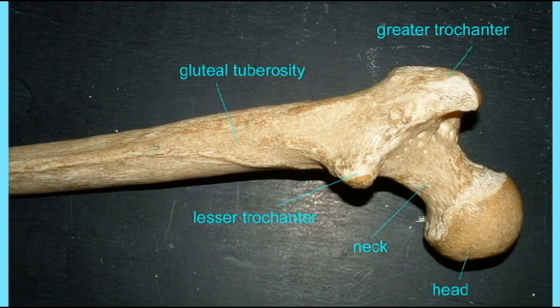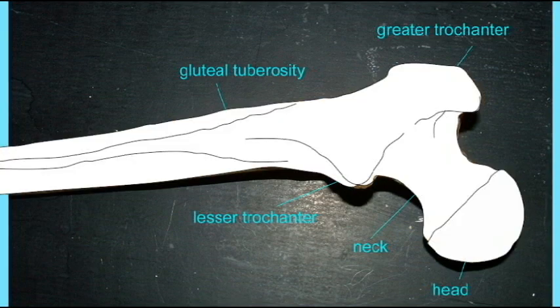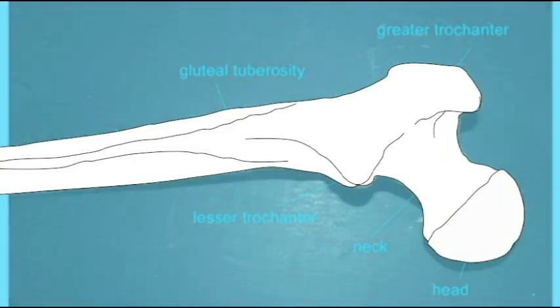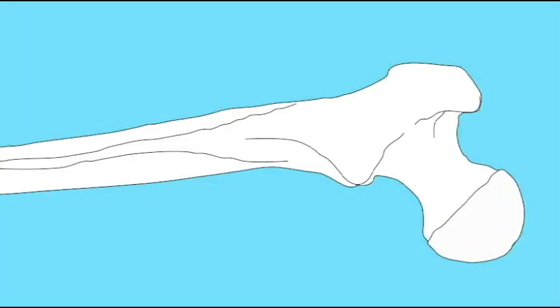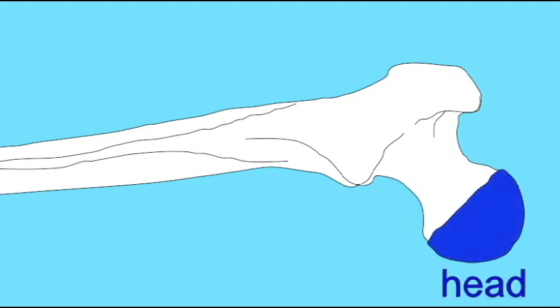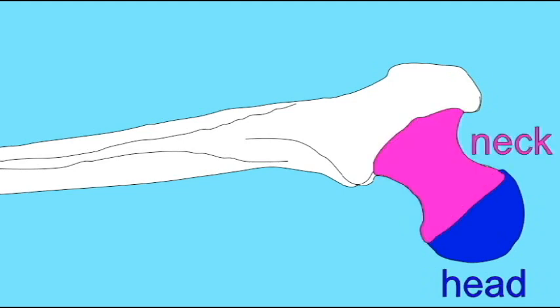This is the posterior view of the proximal end of the femur. There is the notable head, which forms the ball for the ball-and-socket joint of the hip. Distal to this is the neck. Fractures in the neck of the femur are the most frequent cause of a broken hip.